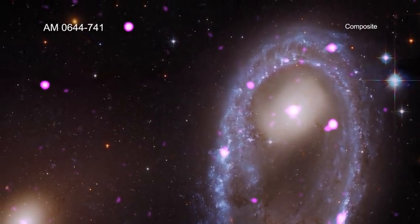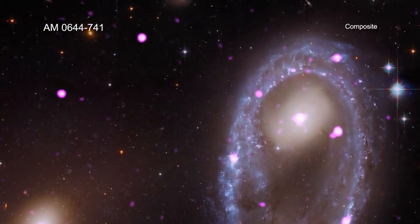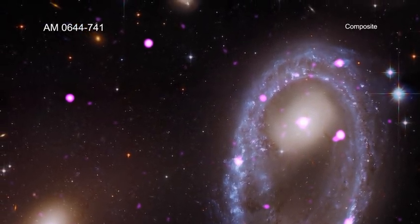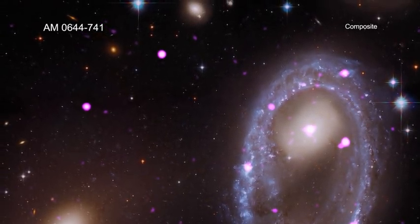The galaxy, called AM0644-741, is what astronomers refer to as a ring galaxy. Taking a look at the image quickly reveals why.